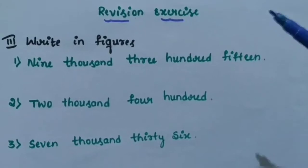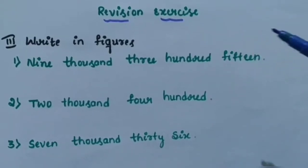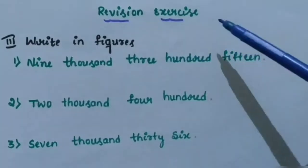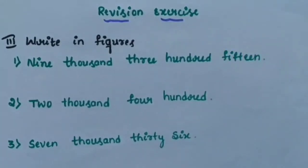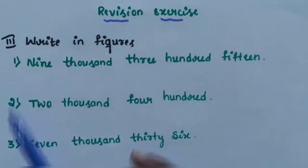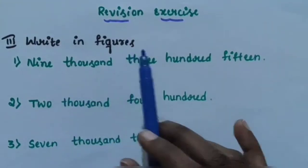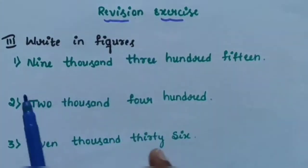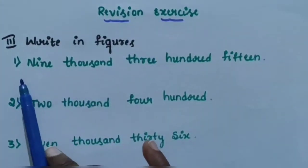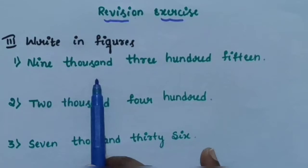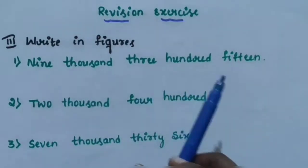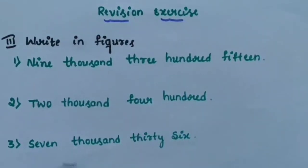Hi children, today let us continue the revision exercise chapter 1, exercise 5 — writing figures for numbers. Sub-question 1: 9315.